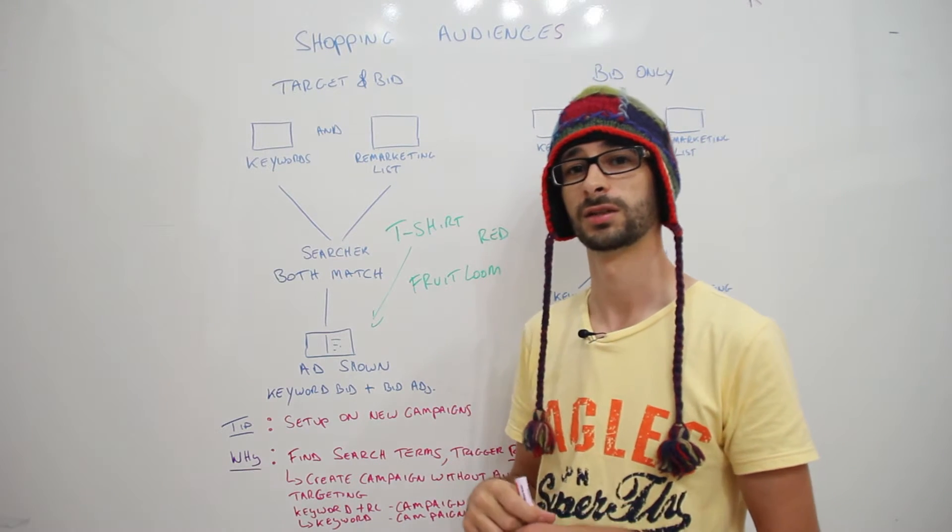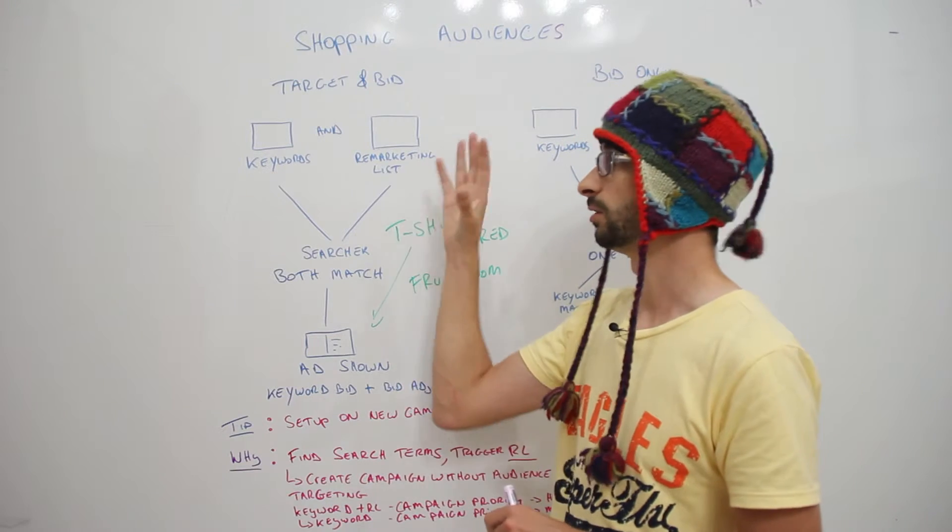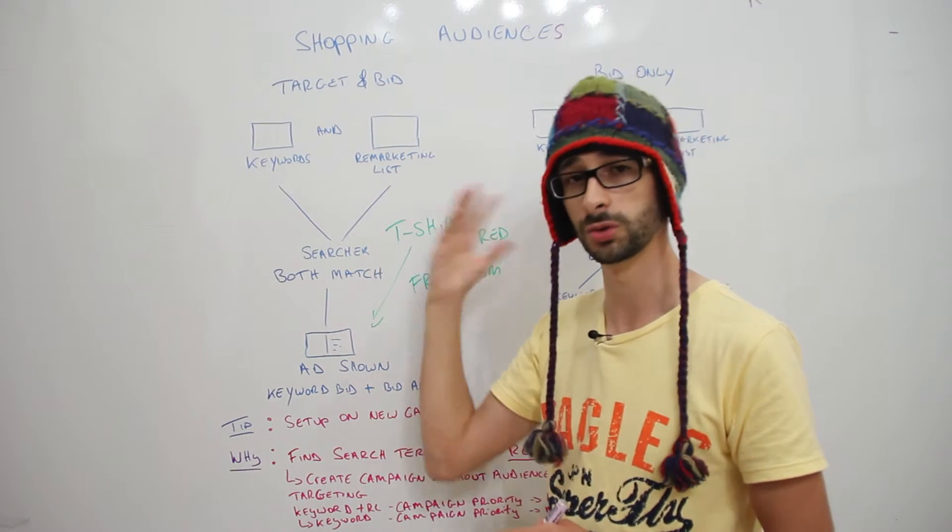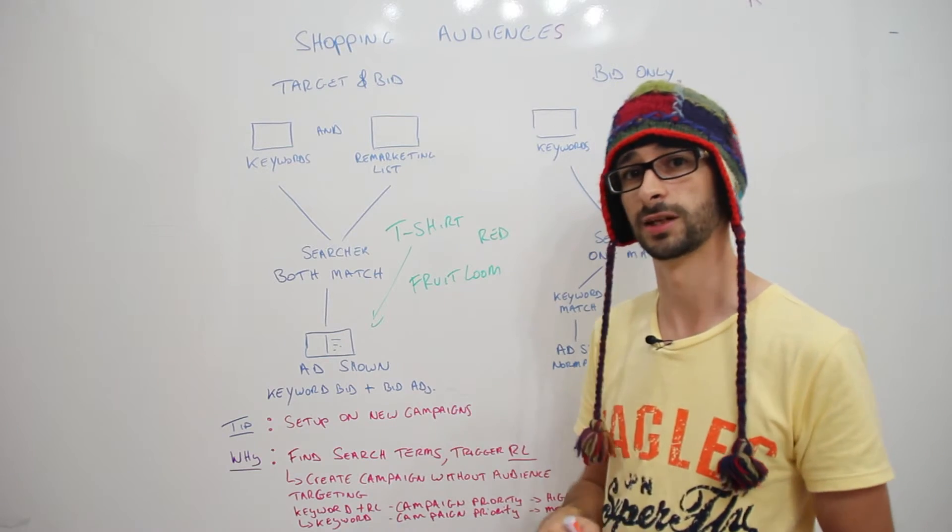So you have got a campaign that does not have an audience remarketing list, but the high priority campaign you do have a remarketing list added. So that's what you need to set up.